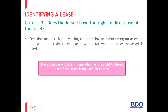Decision-making rights relating only to operating or maintaining an asset do not grant the right to change how and for what purpose an asset is used. The guidance on determining who has the right to direct use of the asset is focused on control — who has control of that asset for the period stipulated in the contract, whether that's a three-year period or just during the mornings when the lessee has the contractual ability to use it.